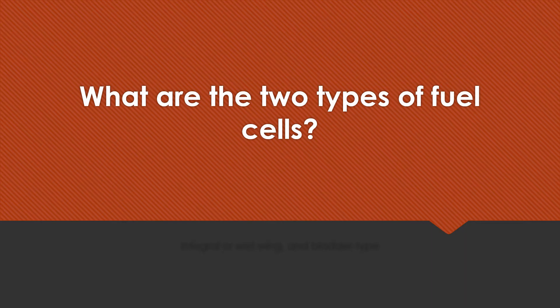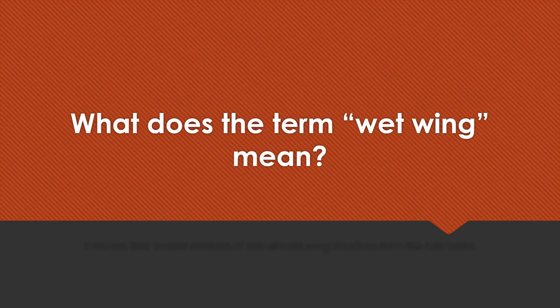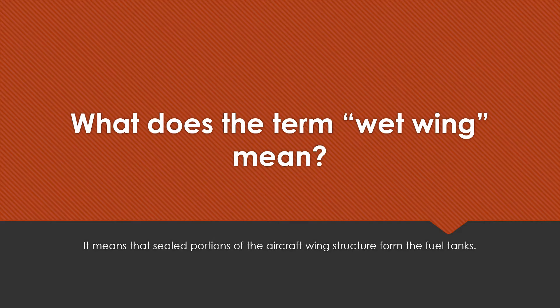What are the two types of fuel cells? Integral or wet wing, and bladder type. What does the term wet wing mean? It means that sealed portions of the aircraft wing structure form the fuel tanks.